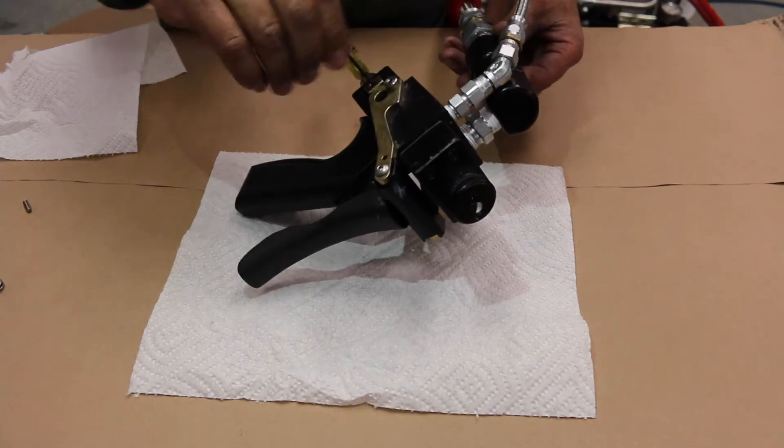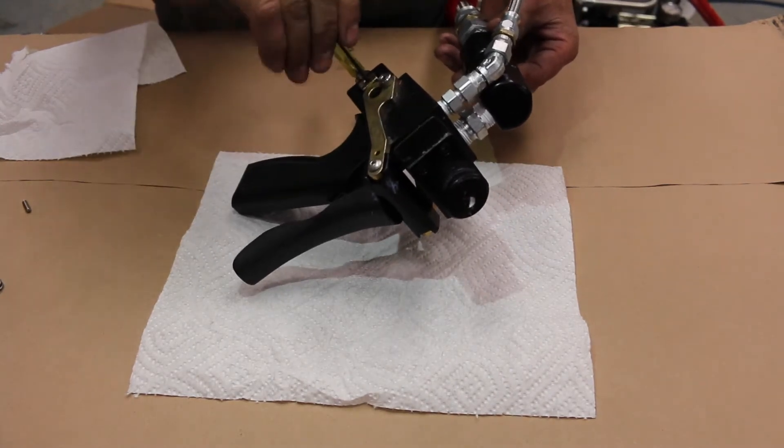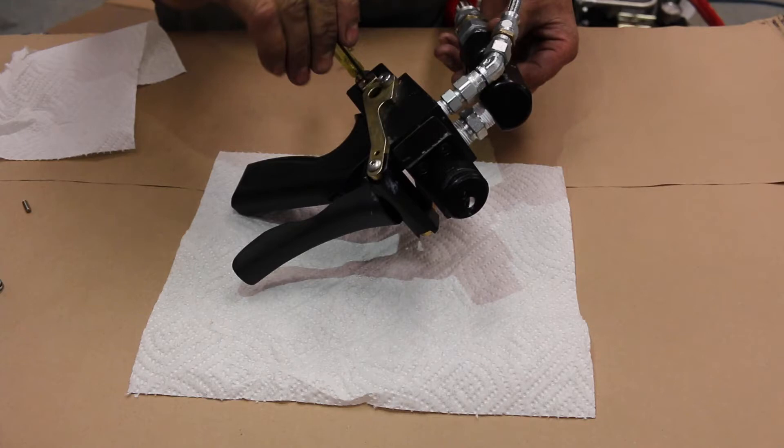Use the allen wrench to test the tightness of the set screw on the catalyst side. Always make sure that the set screw has been loosened before adjusting the applicator. About half to three quarters of a turn counterclockwise should make the set screw loose enough for adjustments.